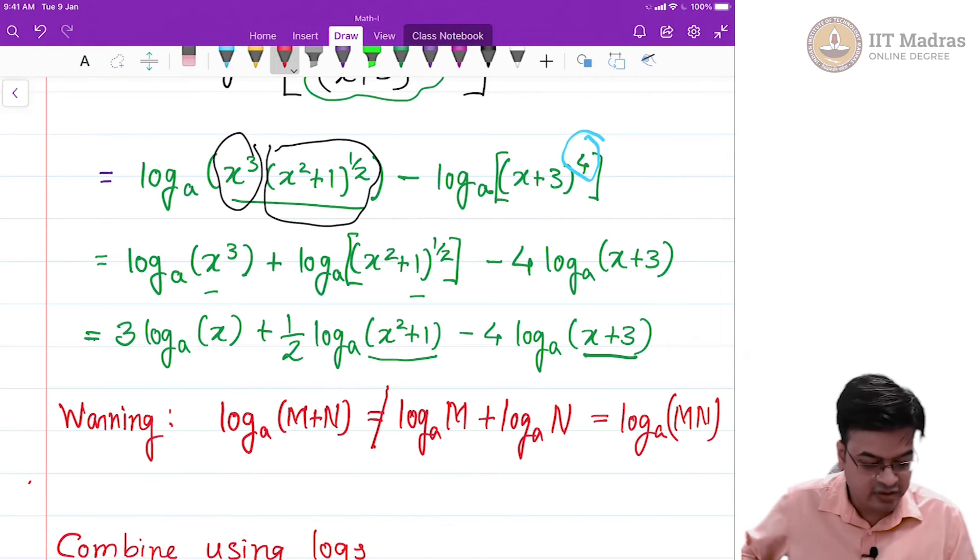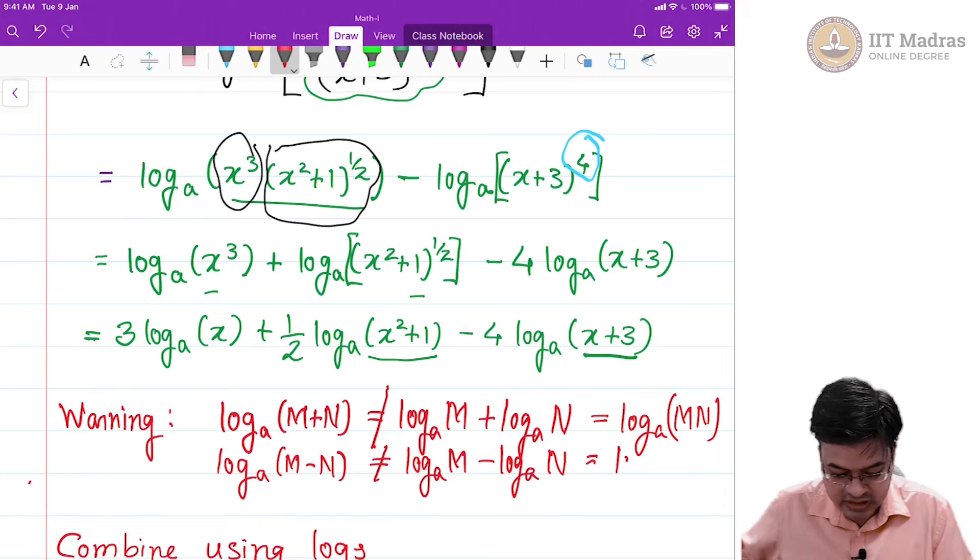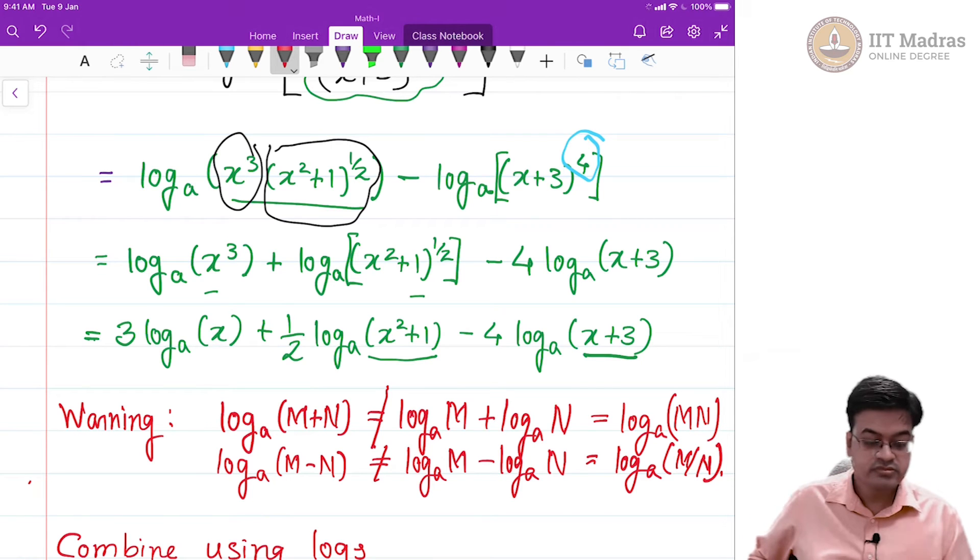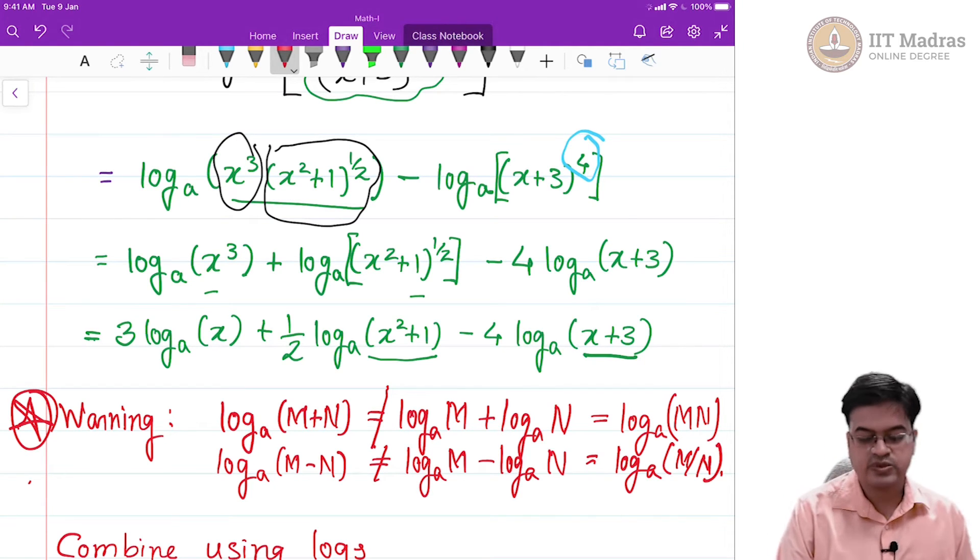In a similar manner, you can have a quotient rule that is log to the base a of m minus n is not equal to log to the base a of m minus log to the base a of n because this is actually equal to log to the base a of m by n. Just remember this warning because generally when you are in the fighting spirit, you are trying to solve the problem, you tend to make these mistakes and which will ruin your entire answer. This is with extra star mark, I am emphasizing that these two are not equal.